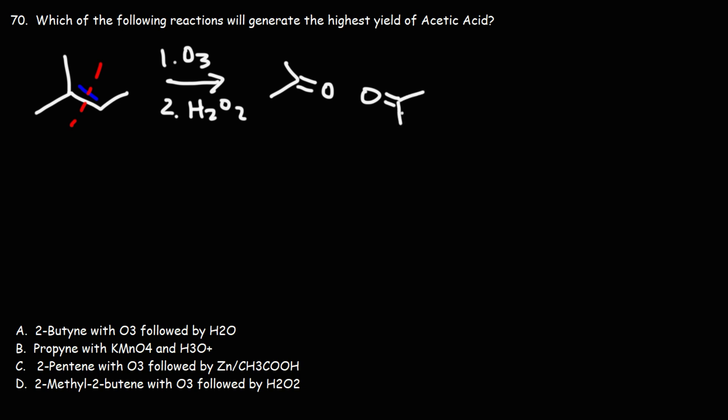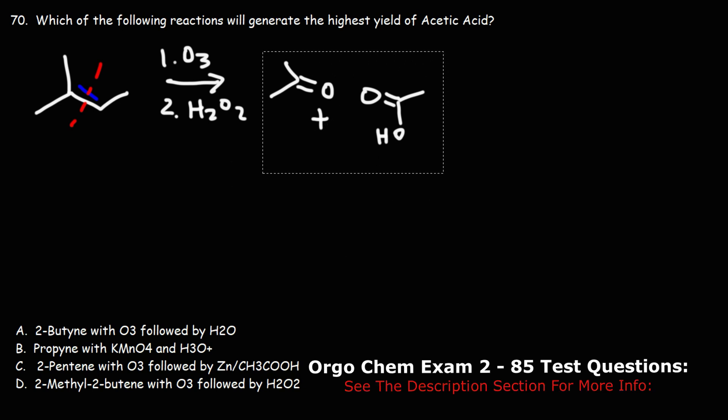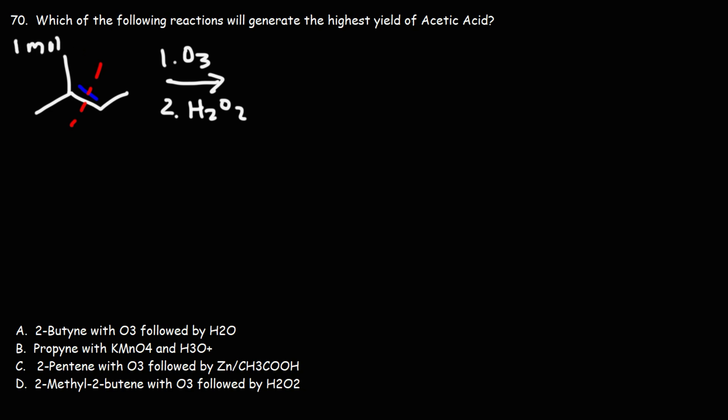It's going to oxidize the primary carbon to a carboxylic acid. So in this reaction, let's say we're starting with one mole of the reactant, we're going to get one mole of acetone and one mole of ethanoic acid, also known as acetic acid. So right now let's keep answer choice D, but we need to compare with other answers to see if that's the highest yield.